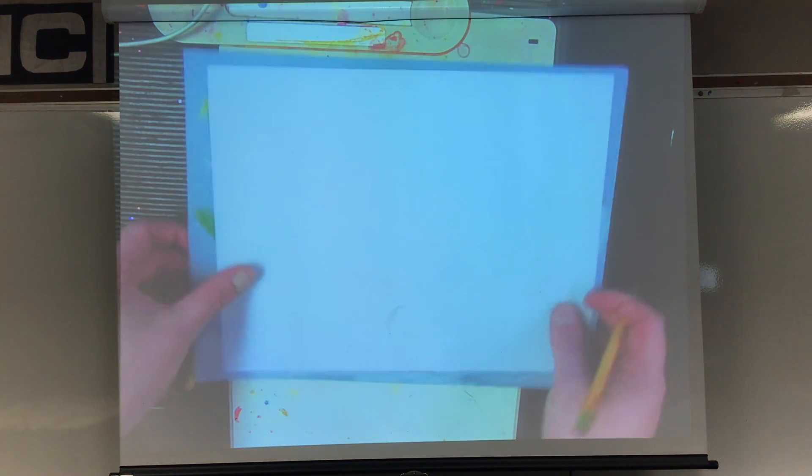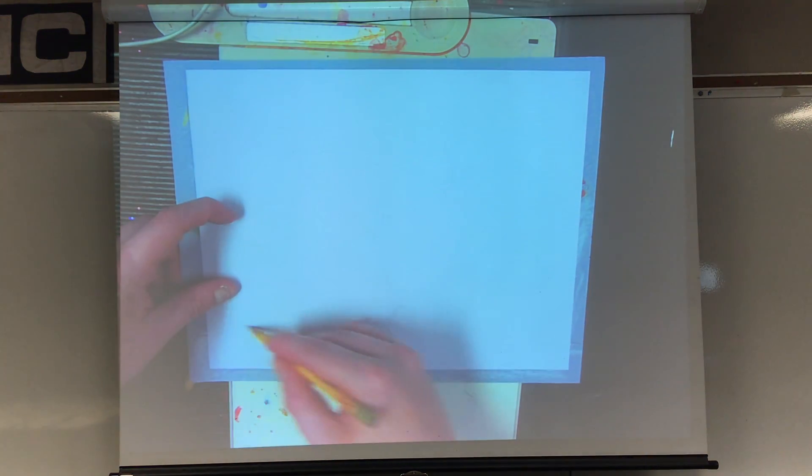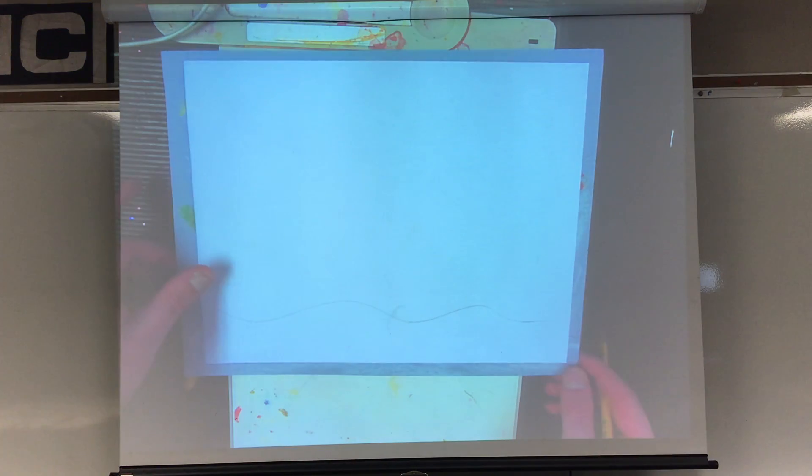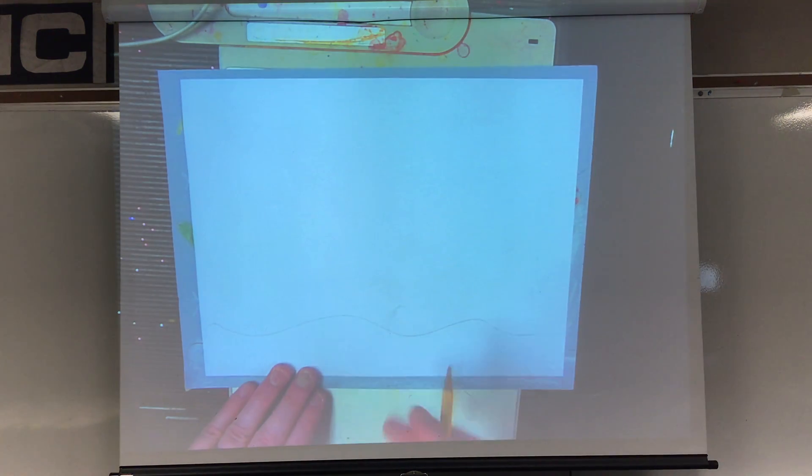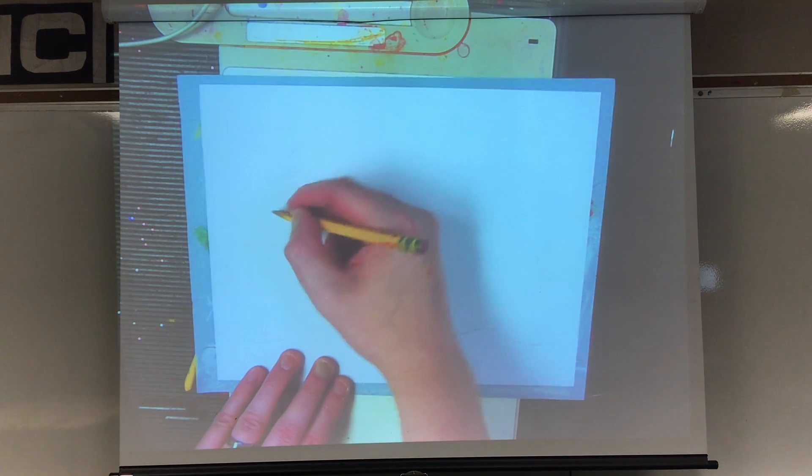So first things first, we always start with the ground just like that. Then we're going to draw ourselves. You can put yourself anywhere you want in your picture. I'm going to start with a circle for my head and then I'm going to draw kind of like a triangle like that. I'm going to go up, down, back in, back down for the little floppy part.